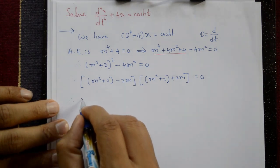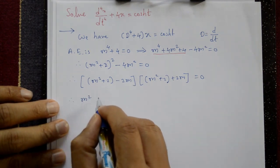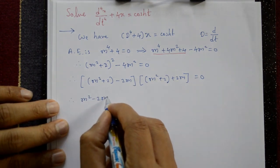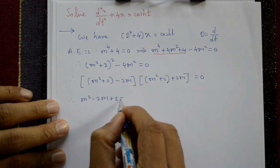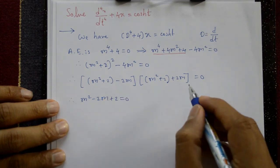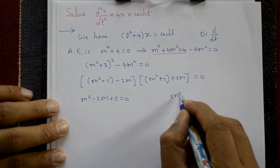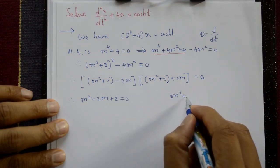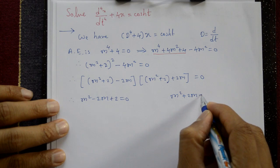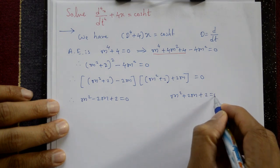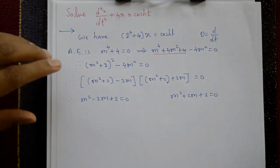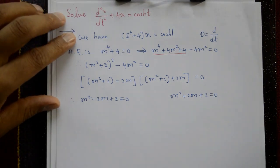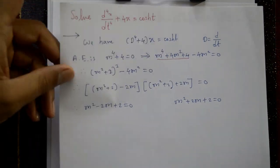Separating the terms: the first factor gives m² - 2m + 2 = 0 and the second gives m² + 2m + 2 = 0. These cannot be factored directly, so we use the quadratic formula.